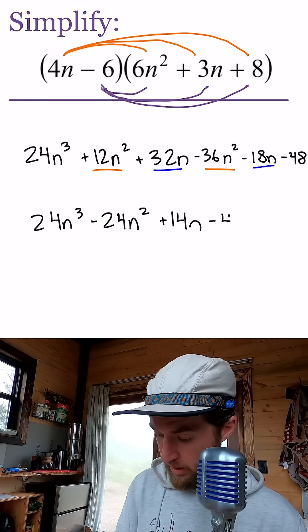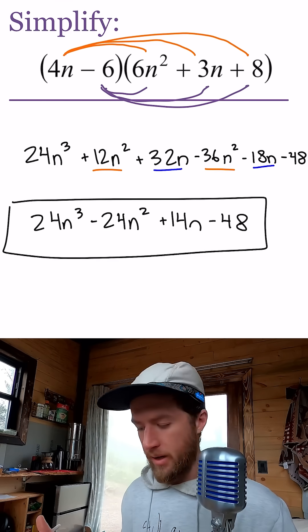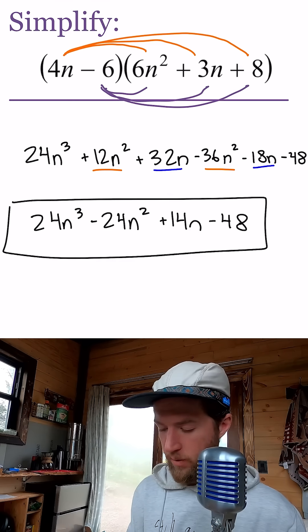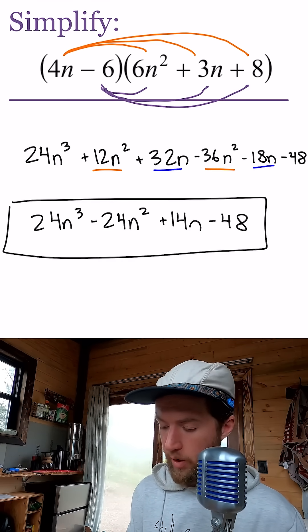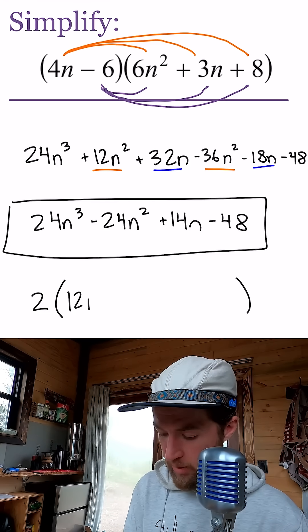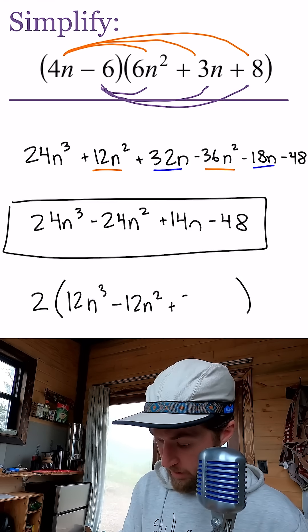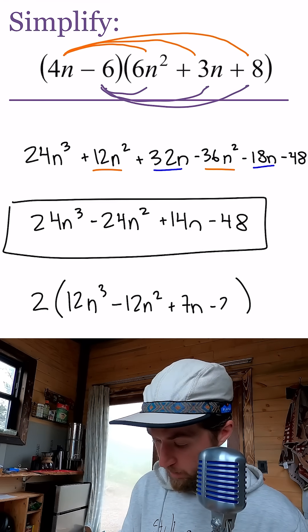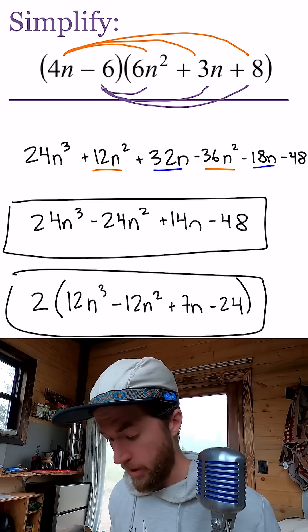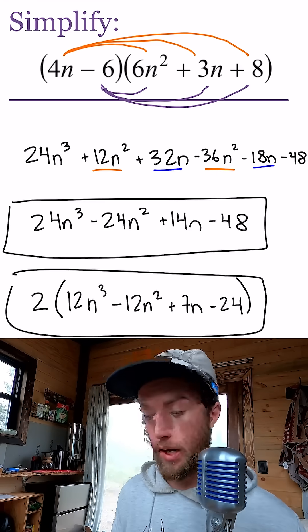And then minus 48. Not very satisfying because it's just kind of like a final answer. If we wanted to pull out a 2 or a 4, I think we can only pull out a 2. We'll pull out a 2 just for fun because I might get called out in the comments: 2(12n³ - 12n² + 7n - 24). Those are the same answer—one is a touch simpler if you're a super pedantic person. All right, on to the next.